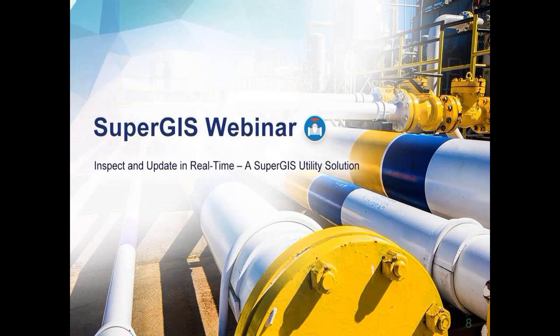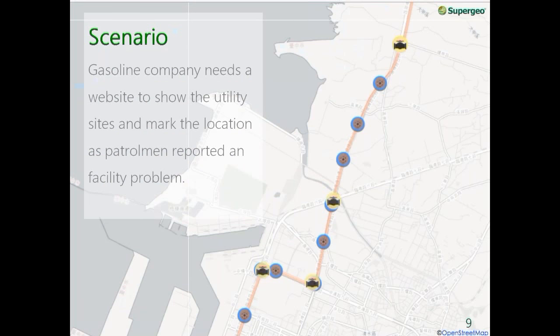Our main topic today is 'Inspect and Update in Real Time: A SuperGeo Utility Solution.' A gas and utility provider wants to build a map website to show utility locations like manholes and valve sites, and also wants to mark positions on the map when inspectors find a possible facility problem.